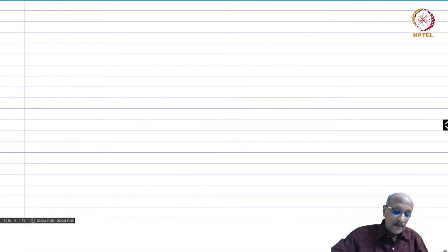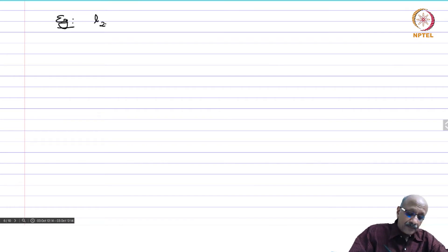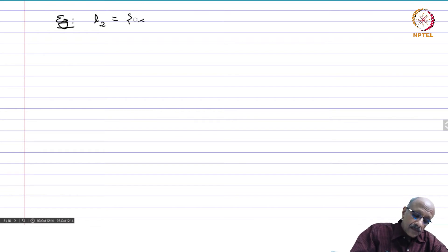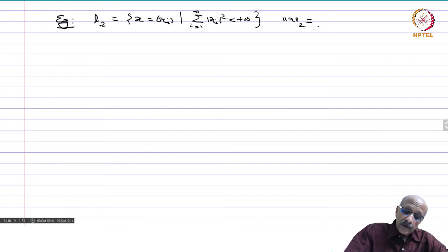Another example. Let us take ℓ². This is the set of all sequences x = (xᵢ) such that Σ |xᵢ|² is finite for i = 1 to infinity, and the norm ‖x‖₂ is the square root of Σ from i=1 to infinity of |xᵢ|².